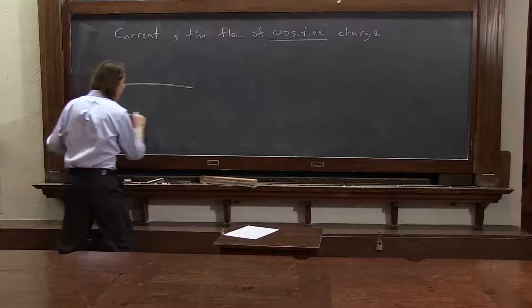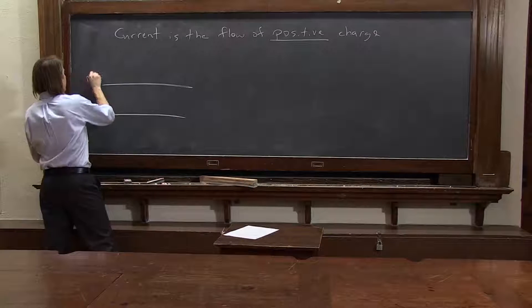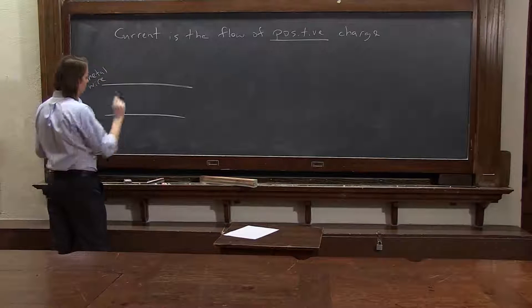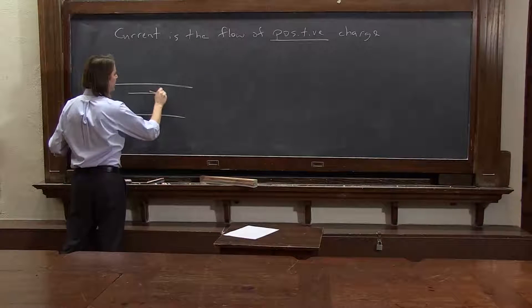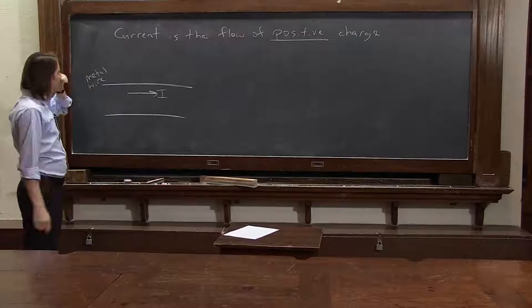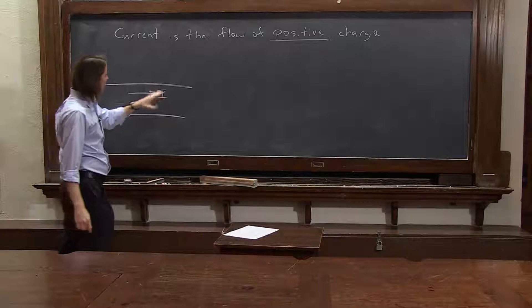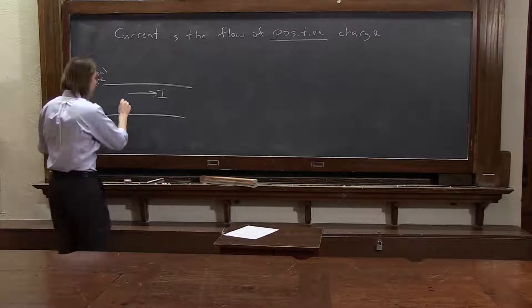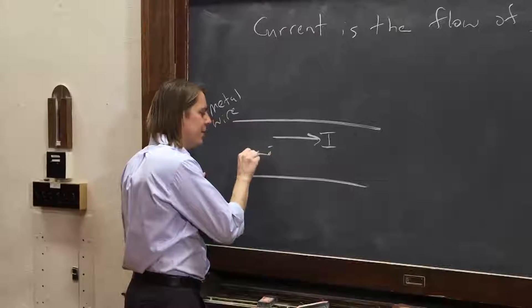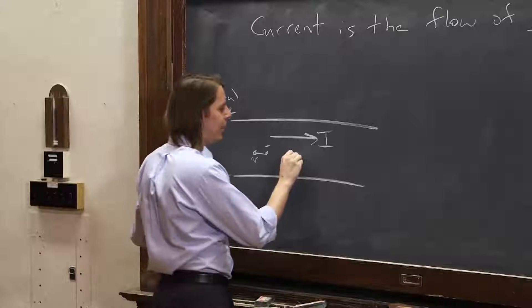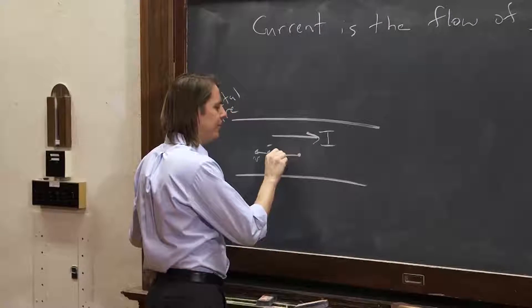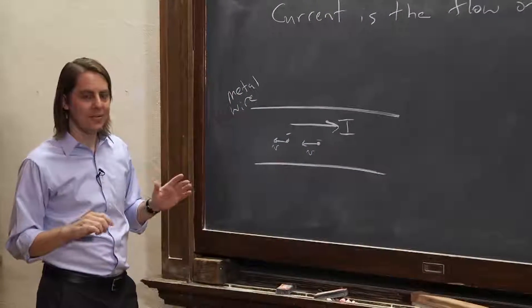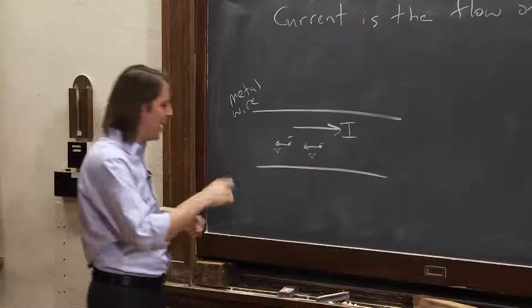Here's a metal wire. We say it has a current in this direction. The current flows this way, from plus to minus. But if I ask you which way are the electrons going, the electrons are going in the opposite direction with some velocity. Current is the flow of positive charge. Therefore, if you're talking about negative particles moving, they're going in the opposite direction.